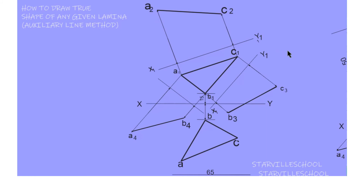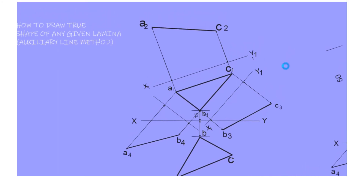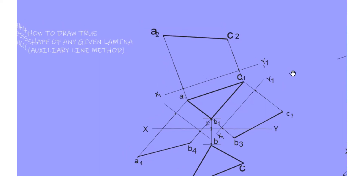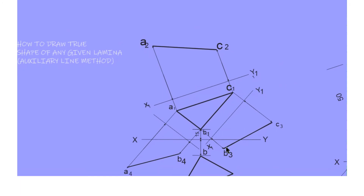The question also asks us to find the true shape of the triangle. To do that, you construct a new triangle using these new true lengths. Take the true length with your compass — take the radius of this length.